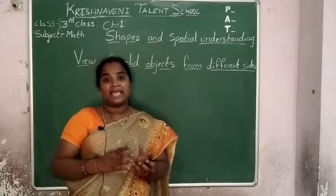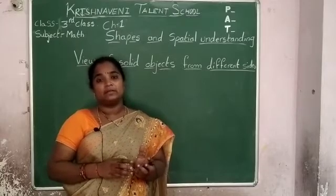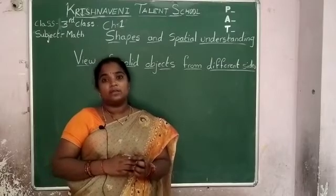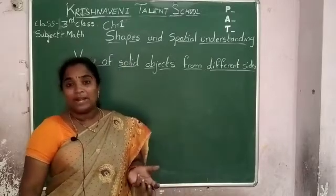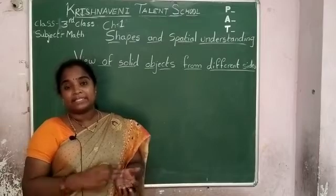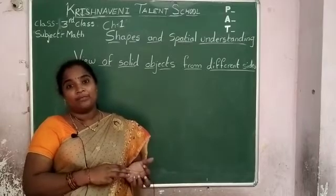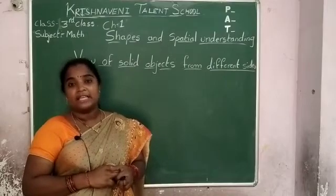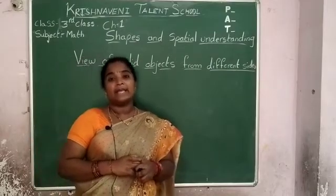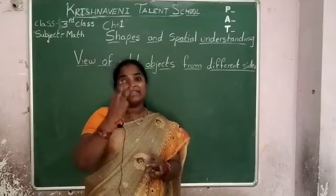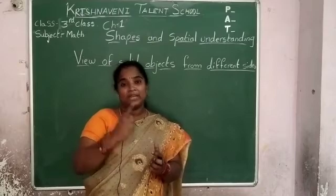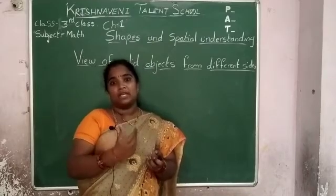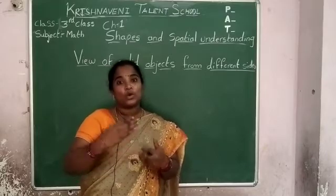Flat surfaces have edges. Next, what is a cylinder? A cylinder is like a gas cylinder or tube light — these are examples of a cylinder. Cylinder has three faces: two flat faces and one curved face. Curved face objects can be rolled.